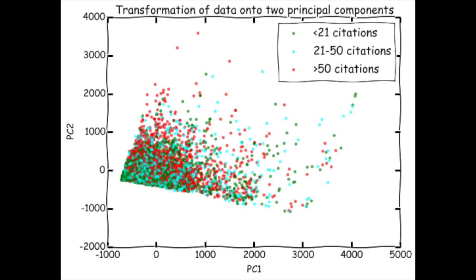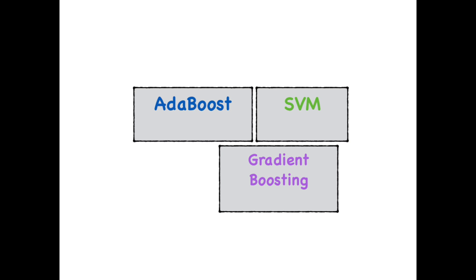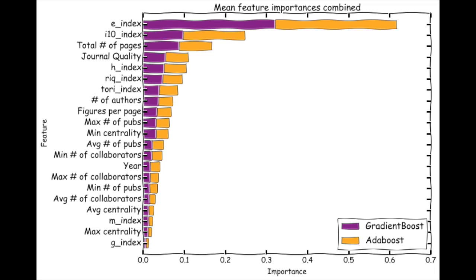We also divided the papers into low, medium, or high citation count categories. This by itself did not make it trivial to analyze the data, but allowed us to perform techniques such as boosted classification to predict paper quality and important features.